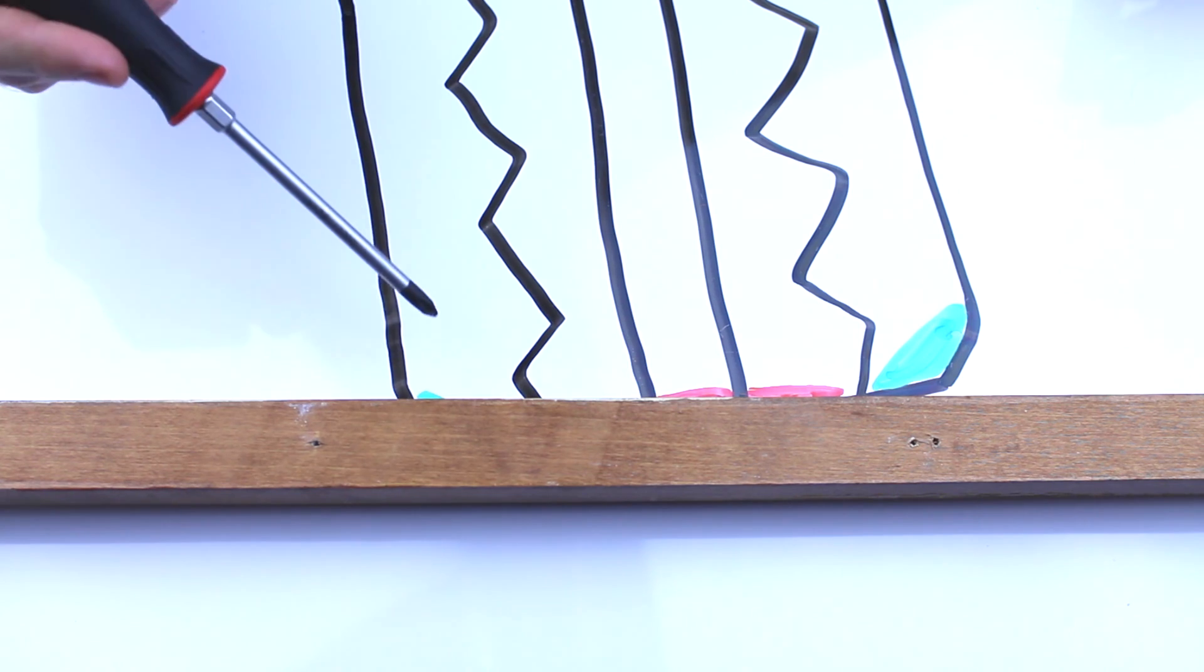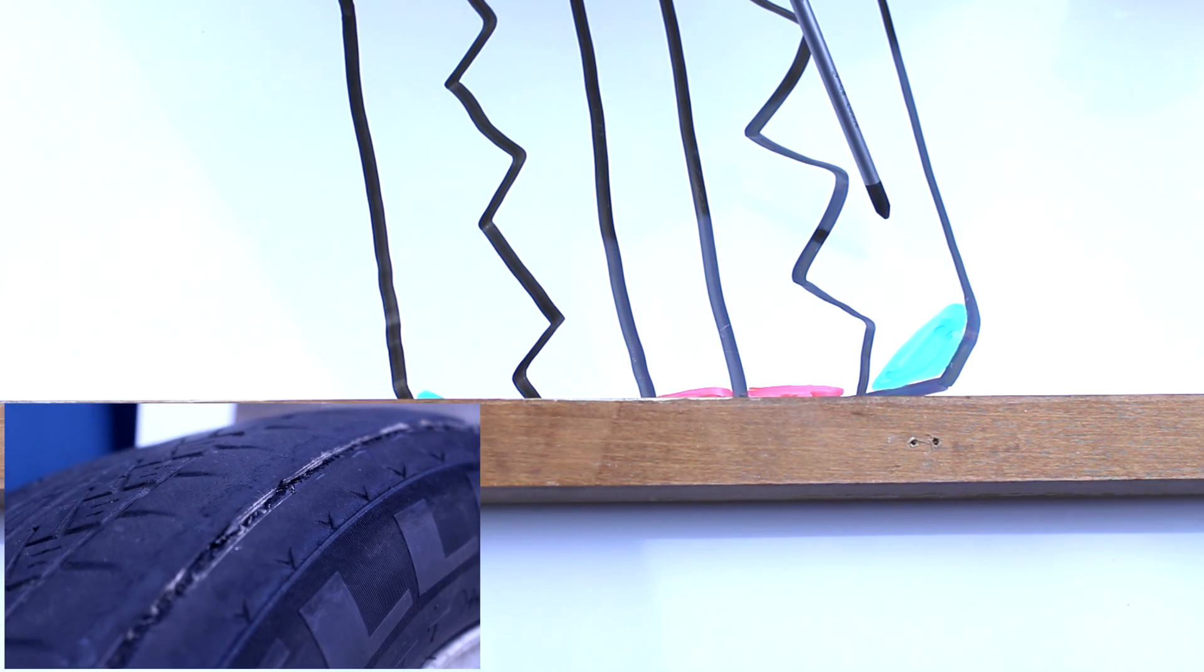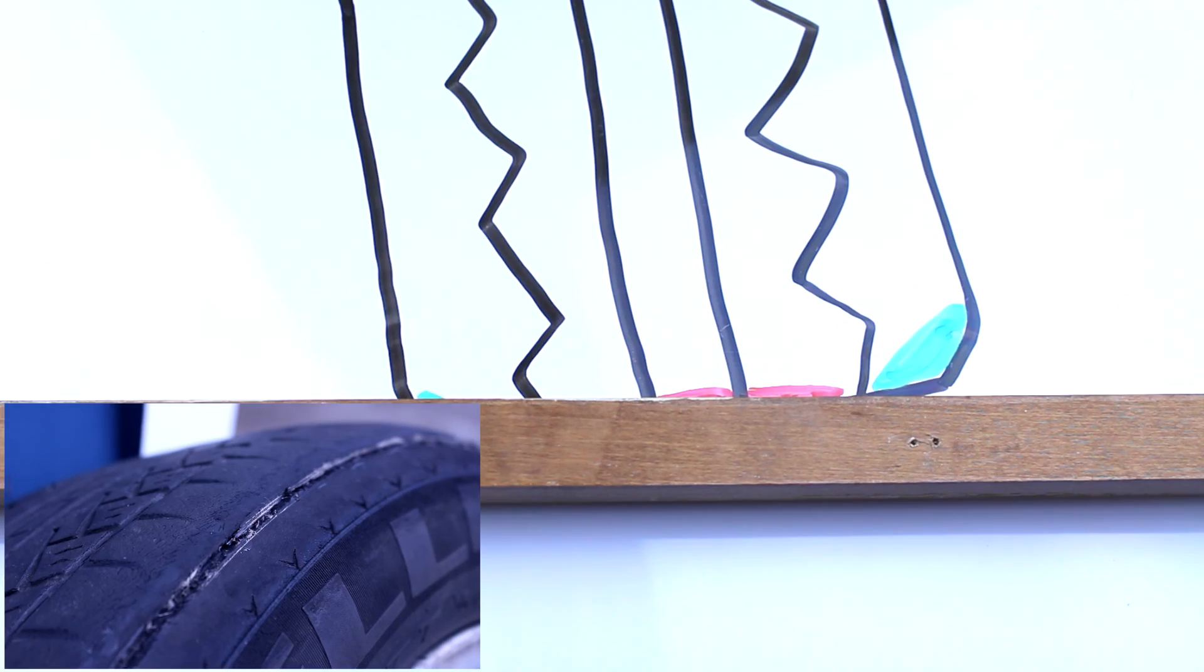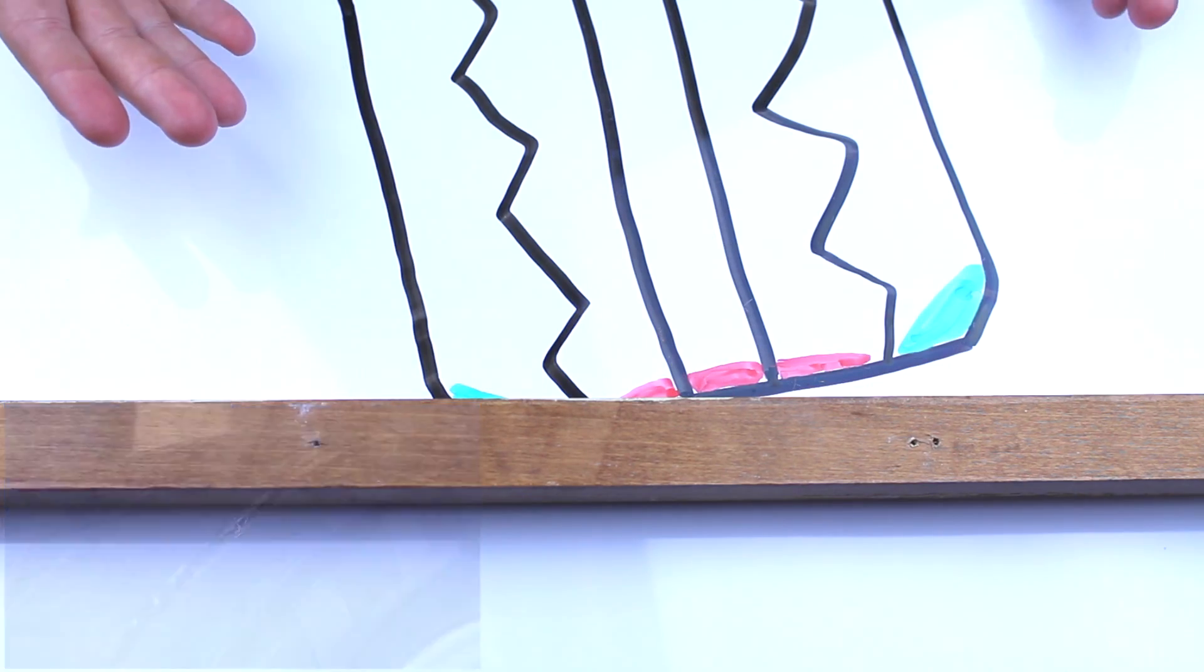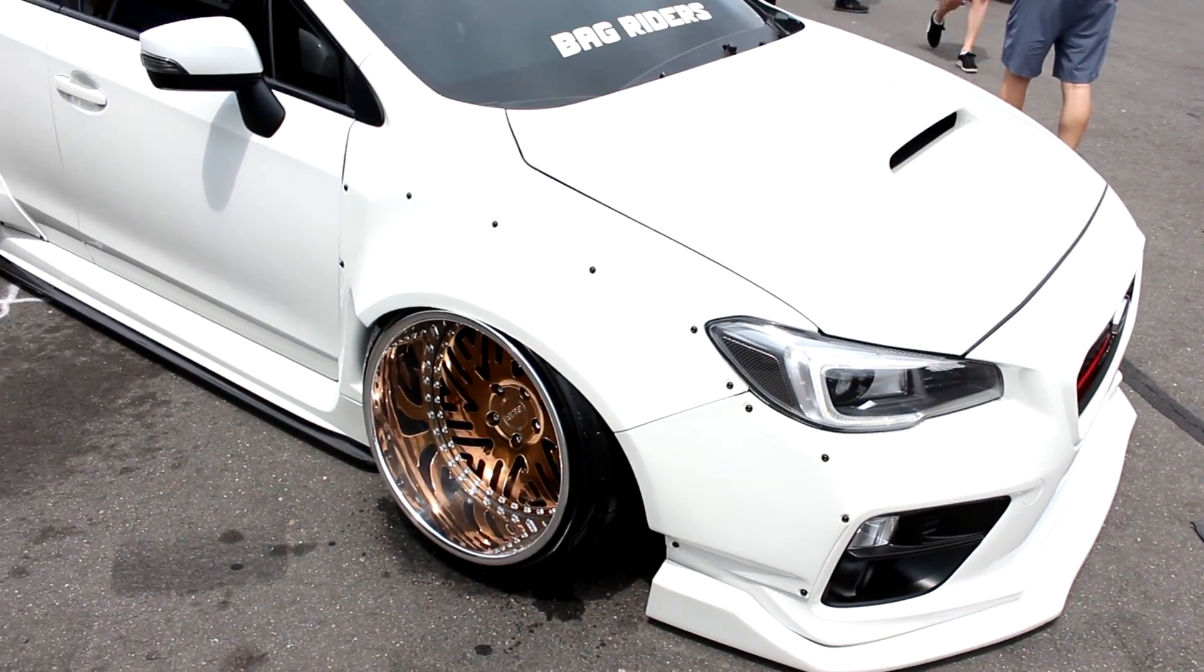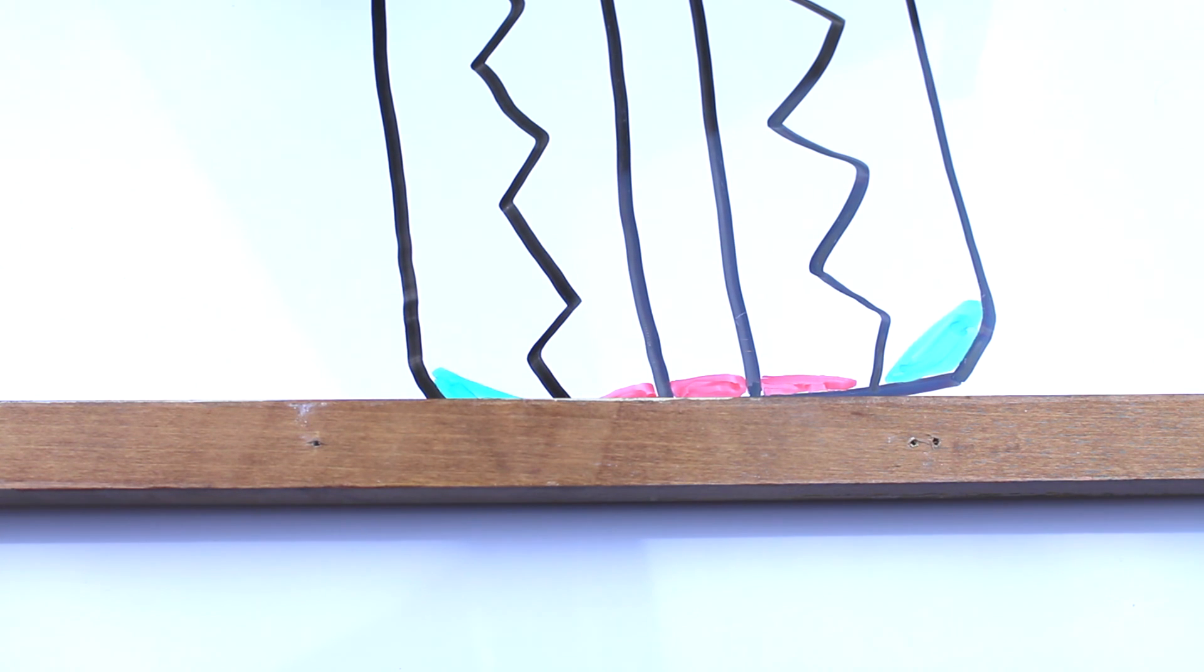With enough camber this side will wear down to the cords of the tire before this side of the tread even sees any pavement. That camber level is a bit extreme but it's just to show you what it would look like. It may end up being like this and you still see a lot of wear on one side versus the other.